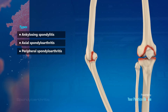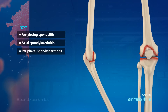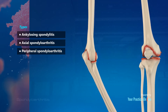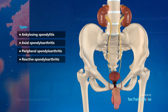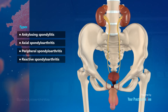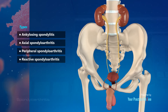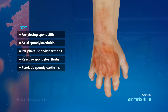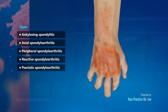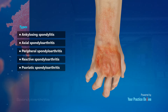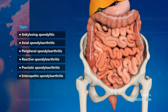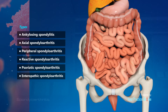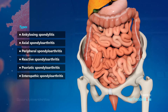Peripheral spondyloarthritis affects the joints of the arms and legs. Reactive spondyloarthritis is an immune reaction to a bacterial infection, such as a genital or urinary tract infection. Psoriatic spondyloarthritis is associated with a skin condition called psoriasis.